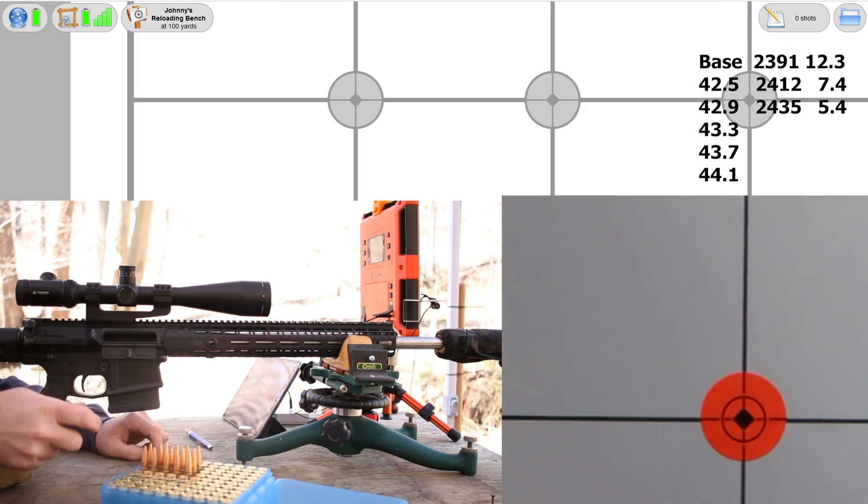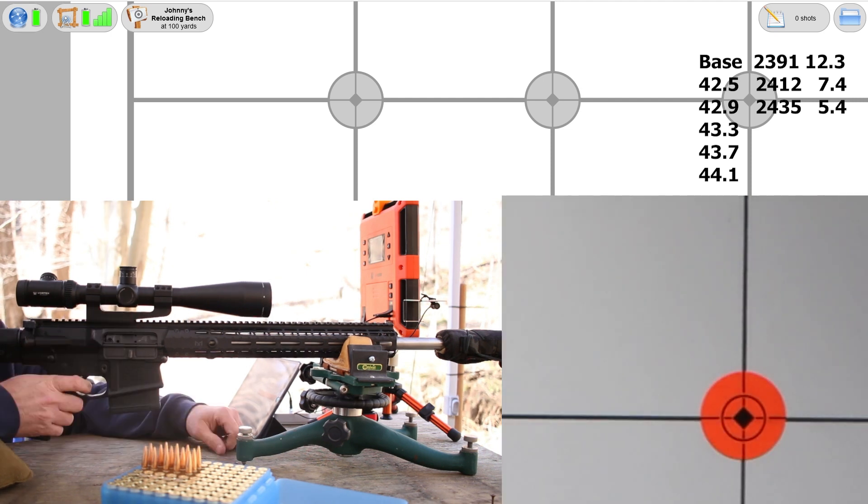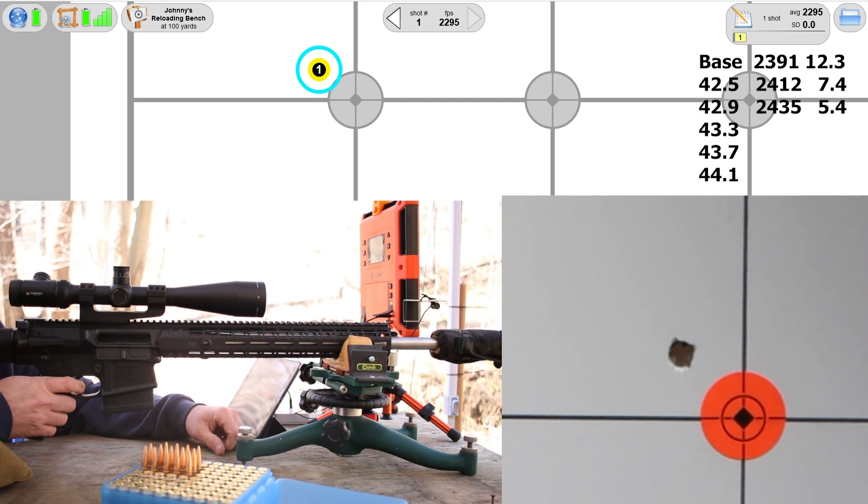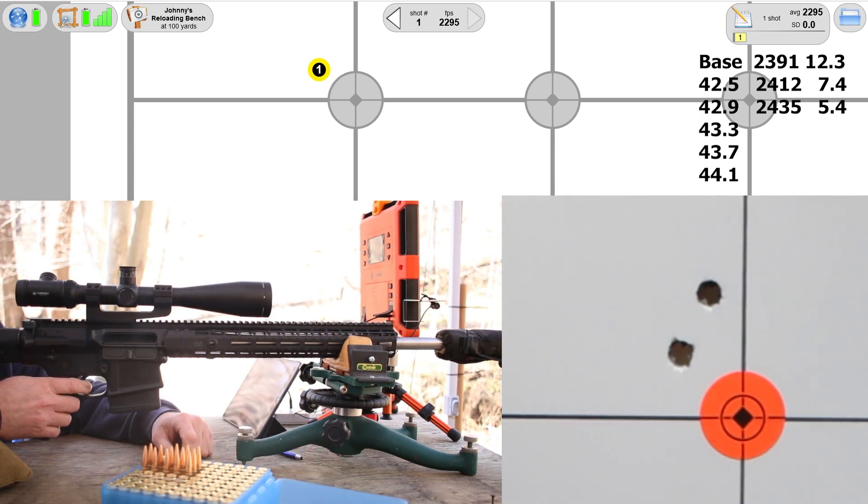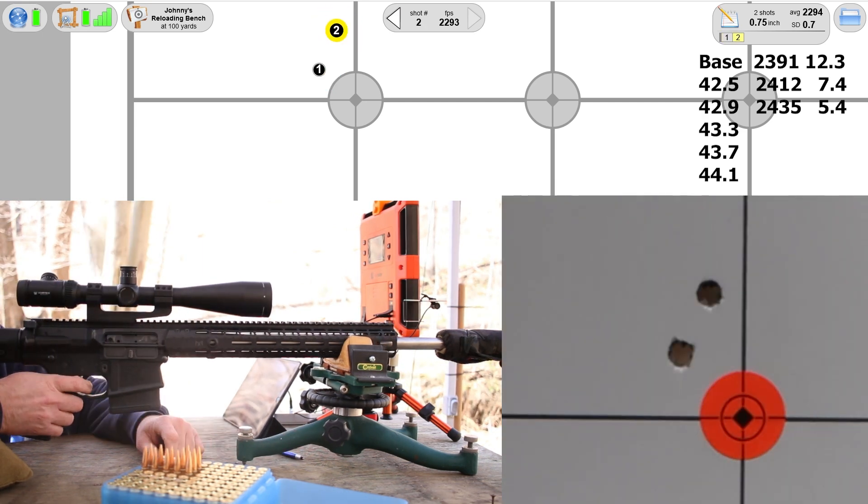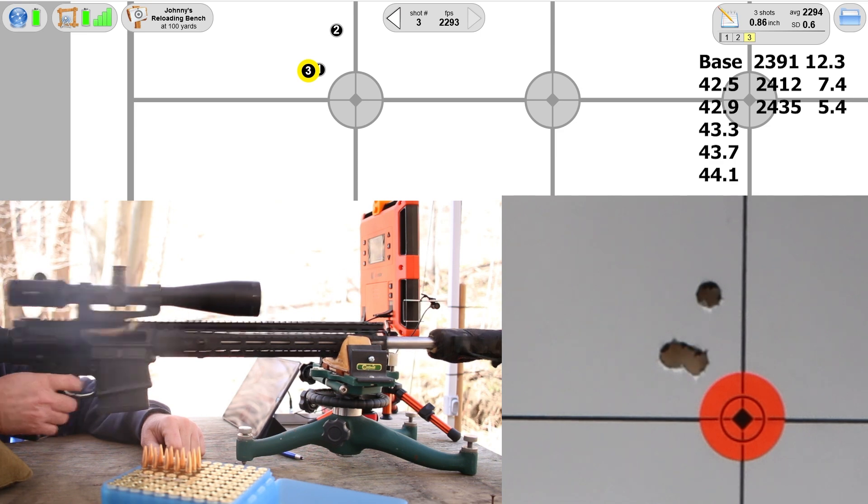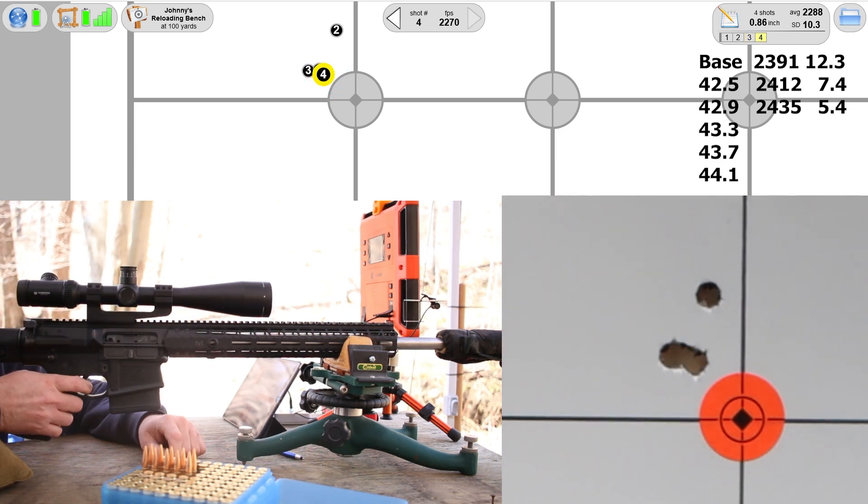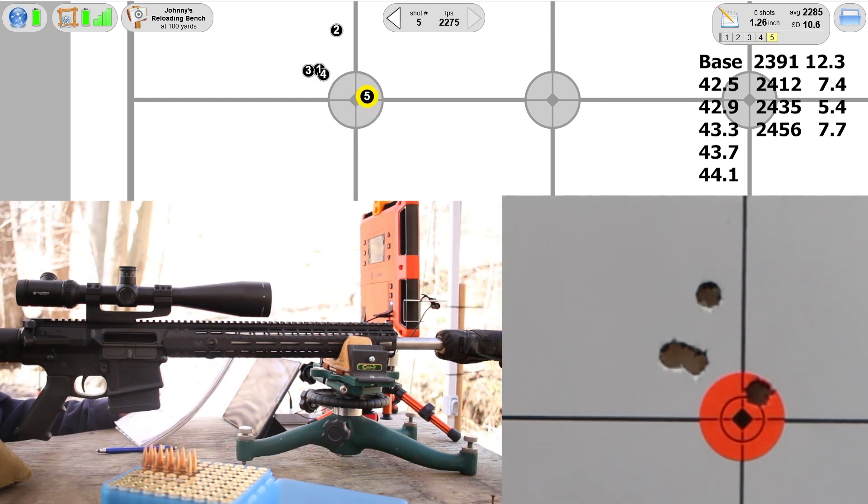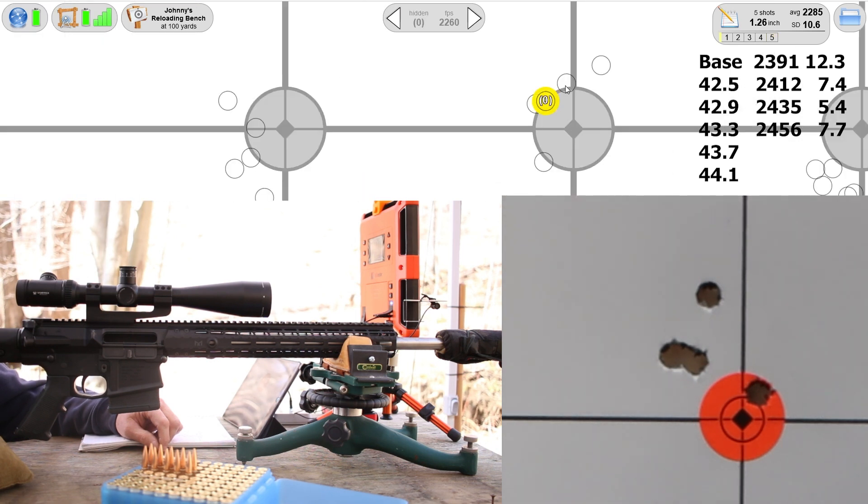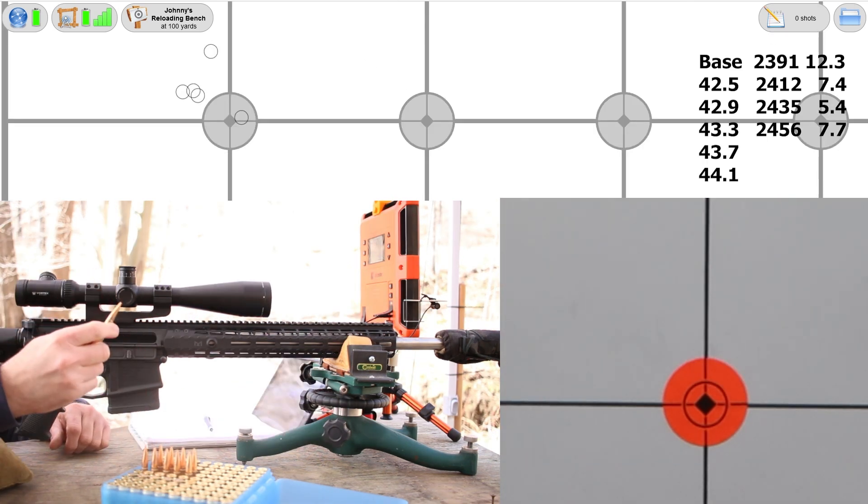43.3 grains. Our brass looks really good. Velocity up to 2456, standard deviation 7.7, and 1.26 inch group. At least we managed to put three of them in close there. But two more to go.